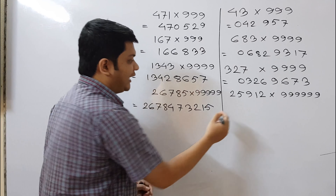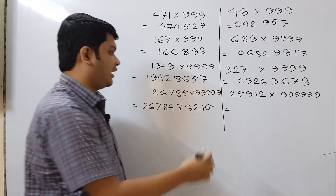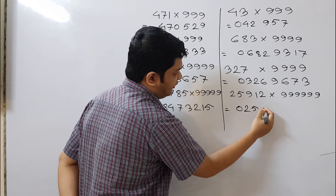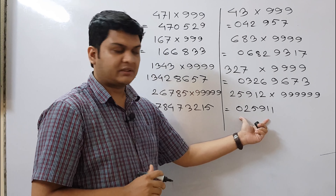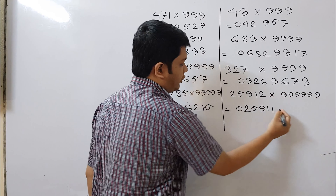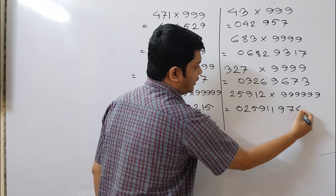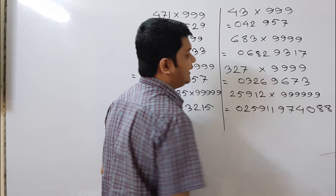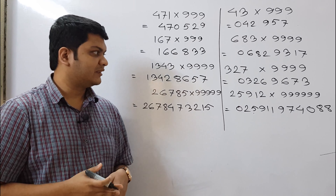For the last Case 2 example, 25911 × 999999: treat as 025911, write 025910, then subtract each digit from 9 — getting 9 for 0, 7 for 2, 4 for 5, 0 for 9, 8 for 1, 8 for 1. Result: 025910 | 974088.